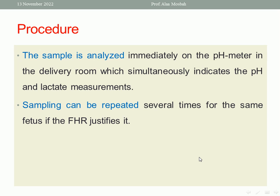This sample is analyzed immediately on a pH meter in the delivery room, which simultaneously indicates the pH and the lactate measurements. We will get the result immediately with this analyzer for the pH and the lactate — so it should be available in the delivery room. Sampling can be repeated several times for the same fetus if the fetal heart rate justifies it.